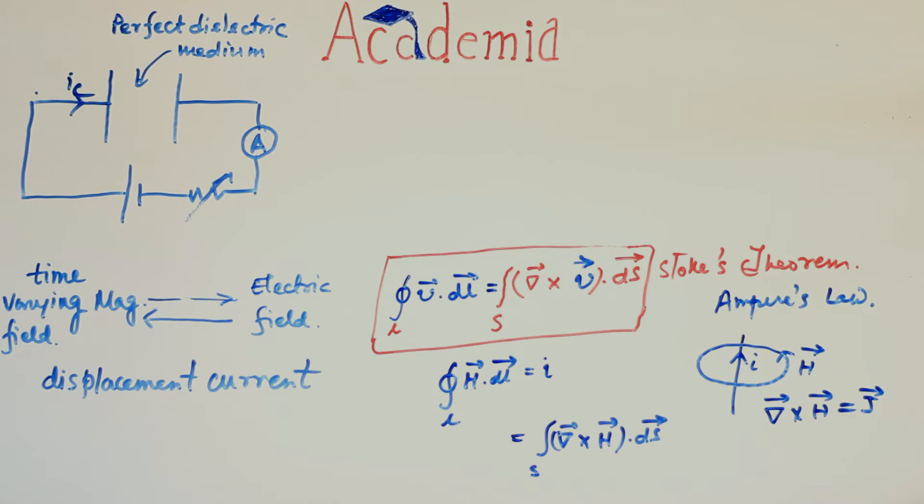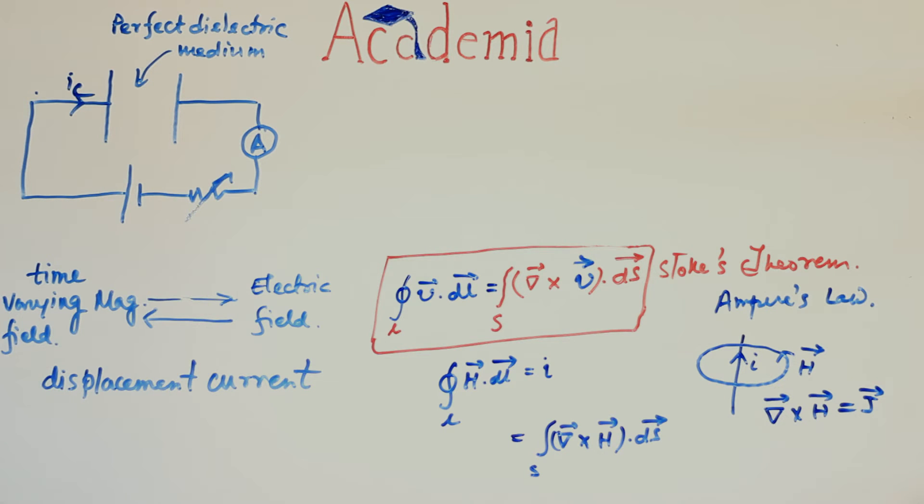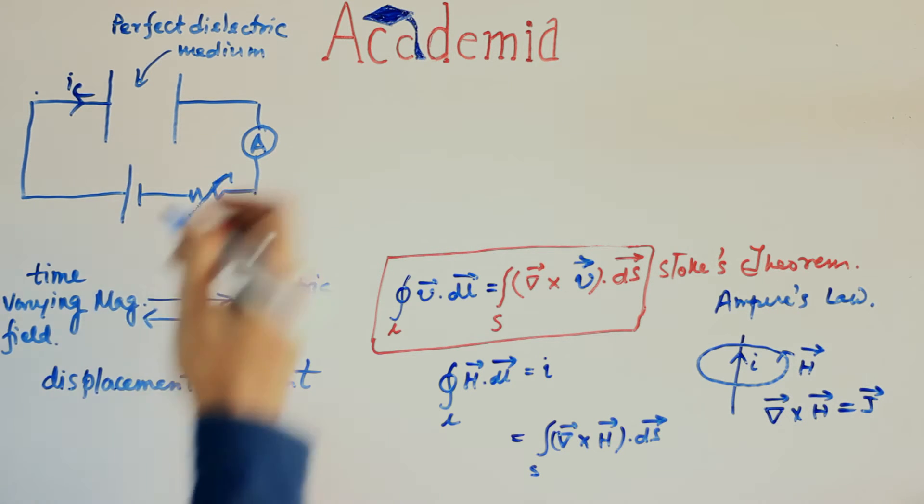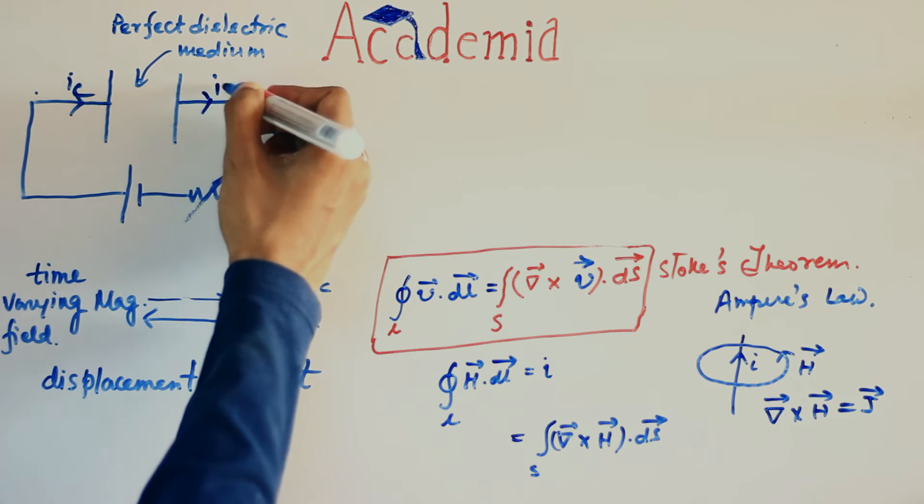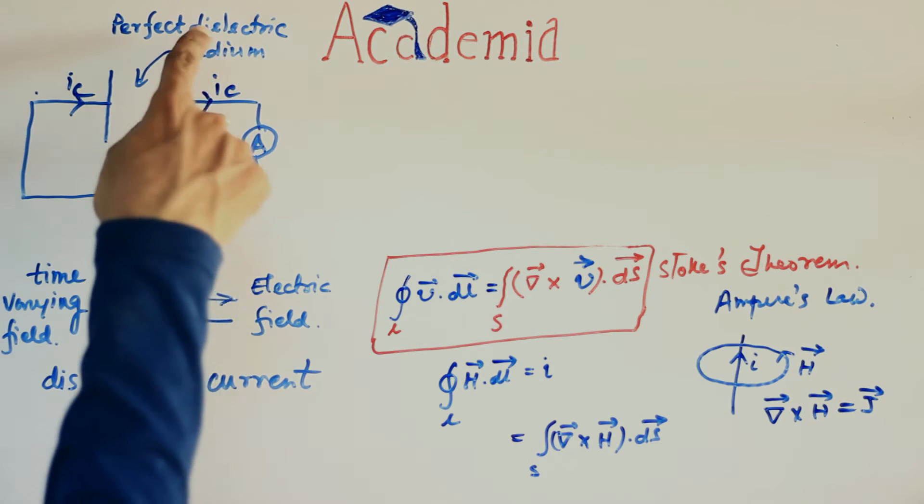But there's a strange thing happening in this circuit. IC current enters this left plate but no current leaves this left plate. Similarly IC current is leaving this right plate but no current entered it. So there's a discontinuity in the path of flow of current due to the presence of this dielectric here.